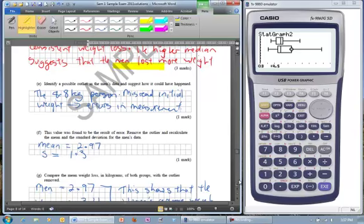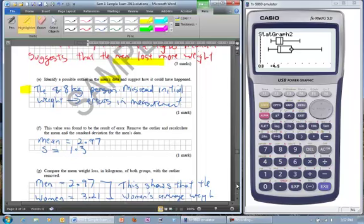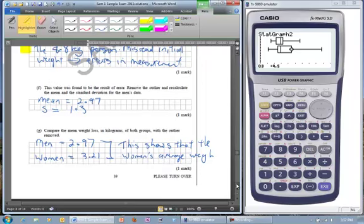Part E: identify a possible outlier and suggest how it could have happened. So looking at the men's data, the 8.8 kilo person could have been an error. It could have been misread the original weight or an error in the second weight. But some people could lose that much weight in a month if they are doing this exercise as well as other parts of fitness.